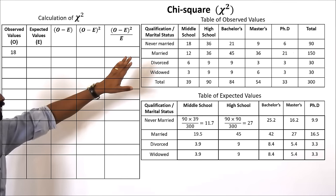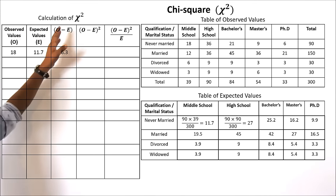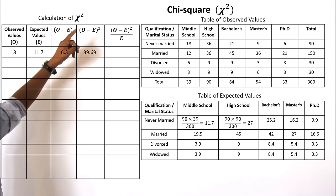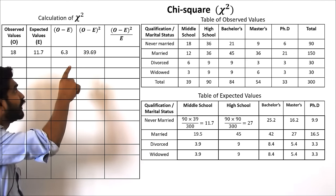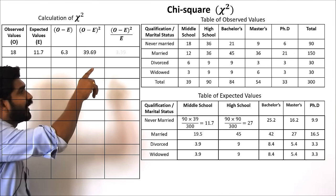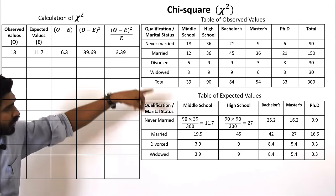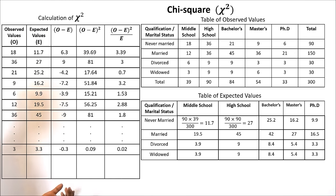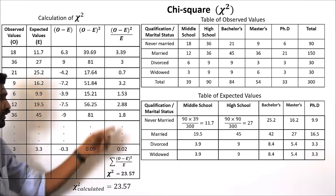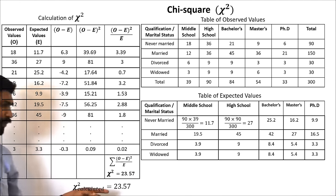The first observed value is 18 and the expected value is 11.7. The difference is 6.3, the square is 39.69, and once divided by the expected value of 11.7 we get 3.39. In the same way we calculate all the differences between the expected and observed values to complete this table.